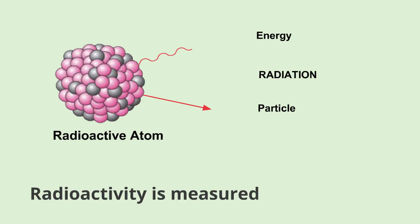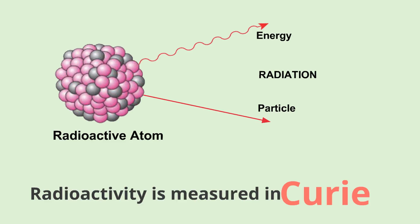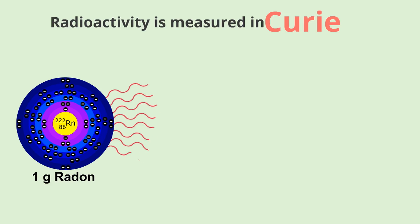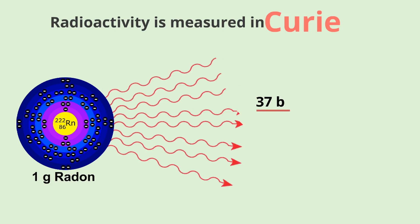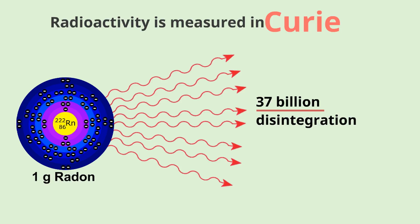Radioactivity is measured in Curie. Based on the rate of decay in 1 gram of radon, it measures the quantity of material that will output 37 billion disintegrations per second.